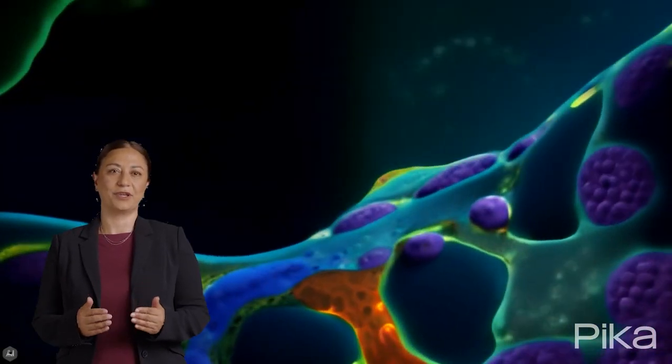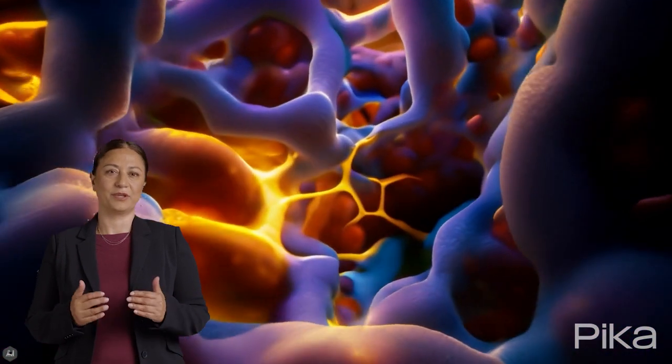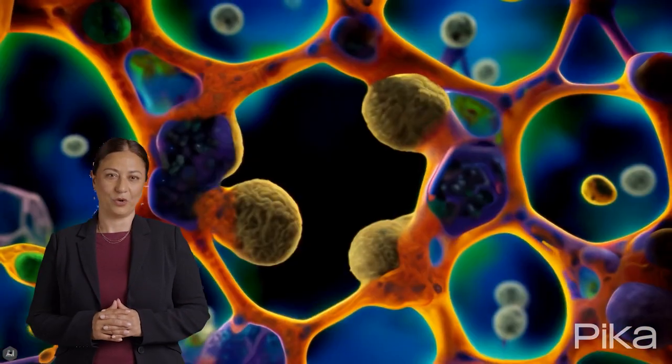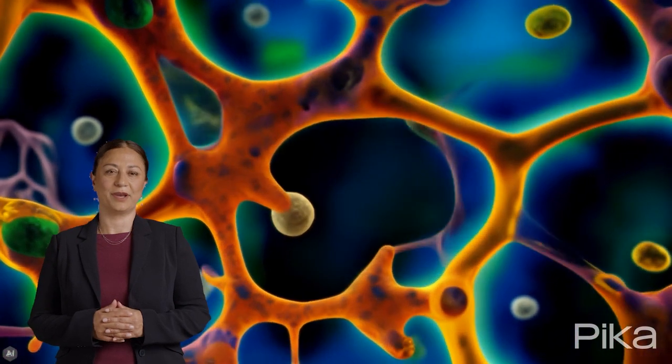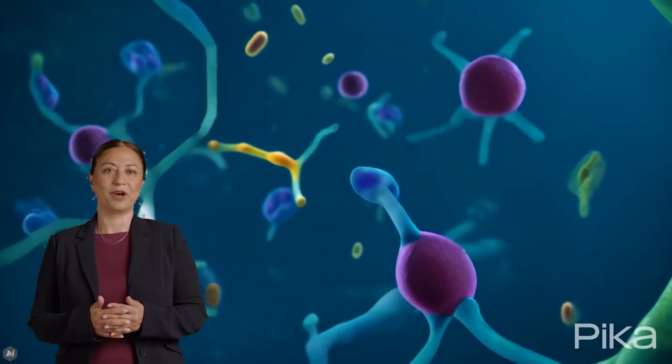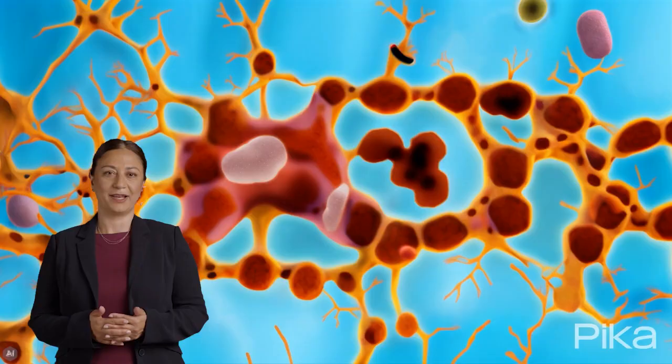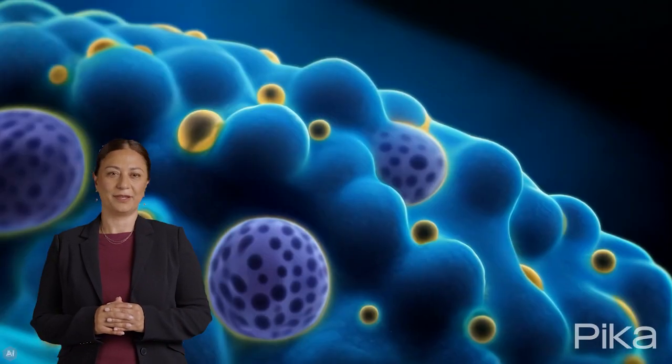The rough ER is primarily involved in the synthesis and folding of proteins destined for secretion or for incorporation into cell membranes. The smooth ER, on the other hand, is associated with lipid synthesis and detoxification processes.